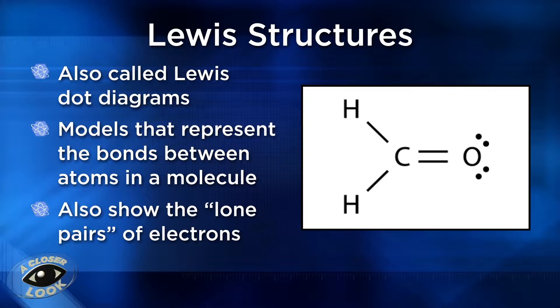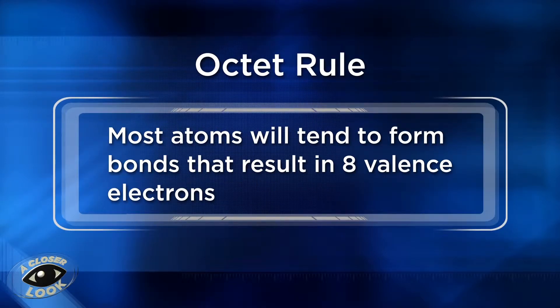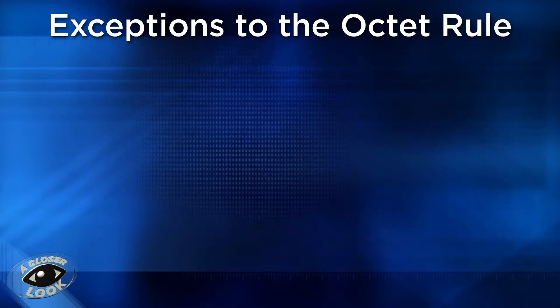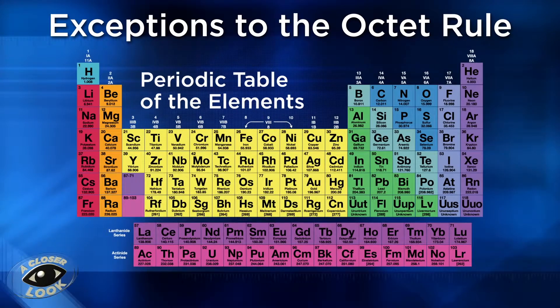When considering atomic bonds, always keep the octet rule in mind, which states that most atoms will tend to form bonds that result in eight valence electrons, which form the most stable compounds. However, there are exceptions to the octet rule.